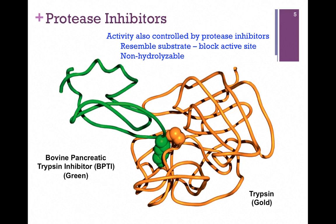Another way that proteases are controlled is by protease inhibitors. A good example is the enzyme trypsin, shown in gold, with a trypsin inhibitor in green. It resembles the substrate very closely so it can bind to the active site, but there's no reaction — it blocks the activity of the enzyme. So we'll see that proteases that digest proteins are controlled in many ways, because we want to be very careful about which proteins we digest and when.